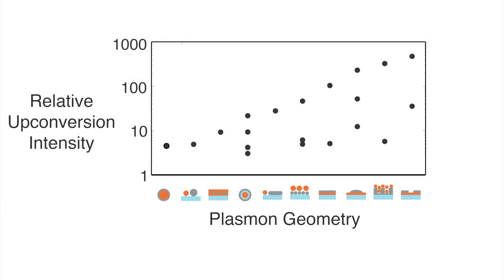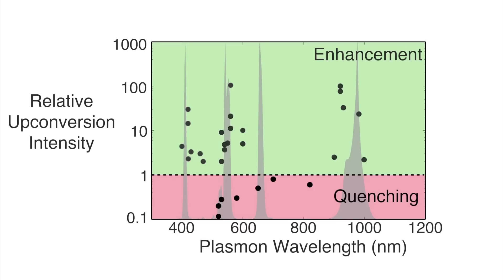In this way, plasmon resonances have helped enhance upconversion by up to 450 times. But in other cases, plasmons can actually decrease the light emitted by an upconverter.